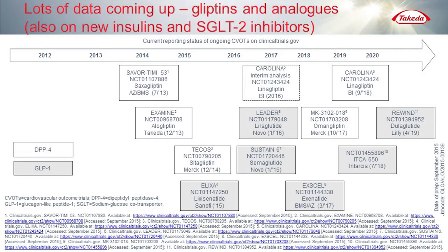This is a brief overview of the DPP4 inhibitor and GLP-1 receptor agonist studies coming in the randomized cardiovascular outcome trials over the next years. We've already seen the results from the SAVOR-TIMI, EXAMINE, and TECOS studies. We've seen the results from ELIXA. And this Thursday we will see the first results from the SGLT2 inhibitor cardiovascular outcome trials.